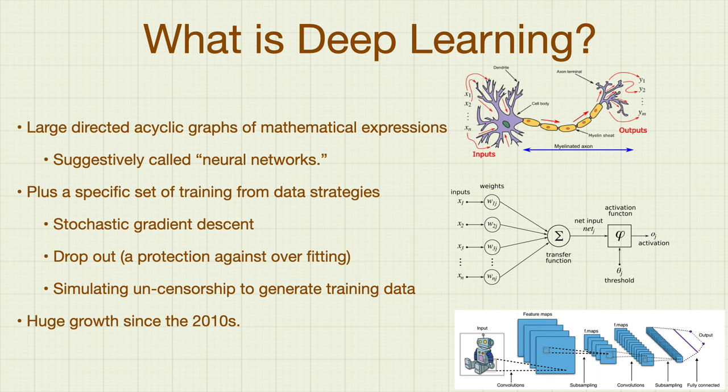The input image might be a thousand pixels by a thousand pixels by three color planes — three million numbers — just represented as a square, and all these other layers are just as large, with billions and billions of wires making this net. This is a diagram of something probably doing image processing and then classifying — is it a robot, is it a cartoon, is it a man? I can tell it's classifying because the output layer is drawn as a line, a series of light bulbs that light up if it's in the class.